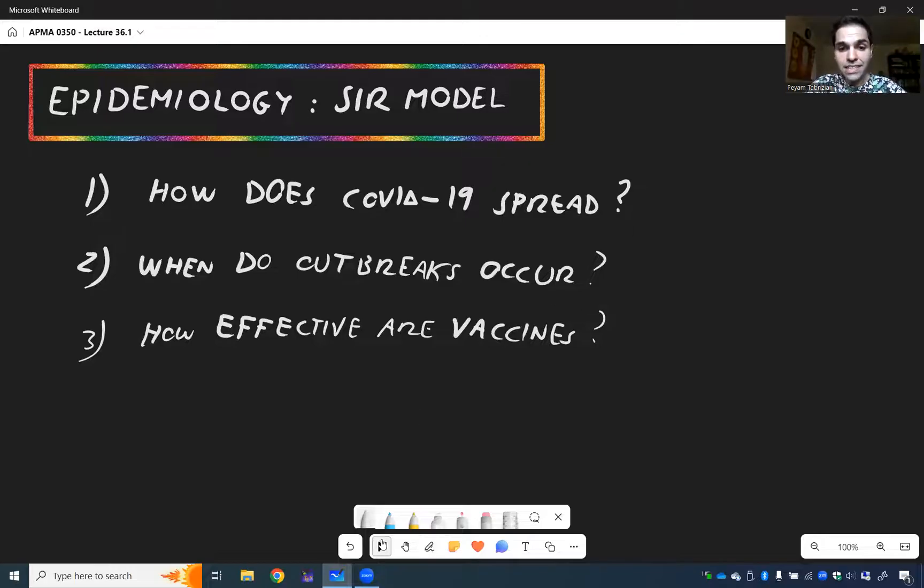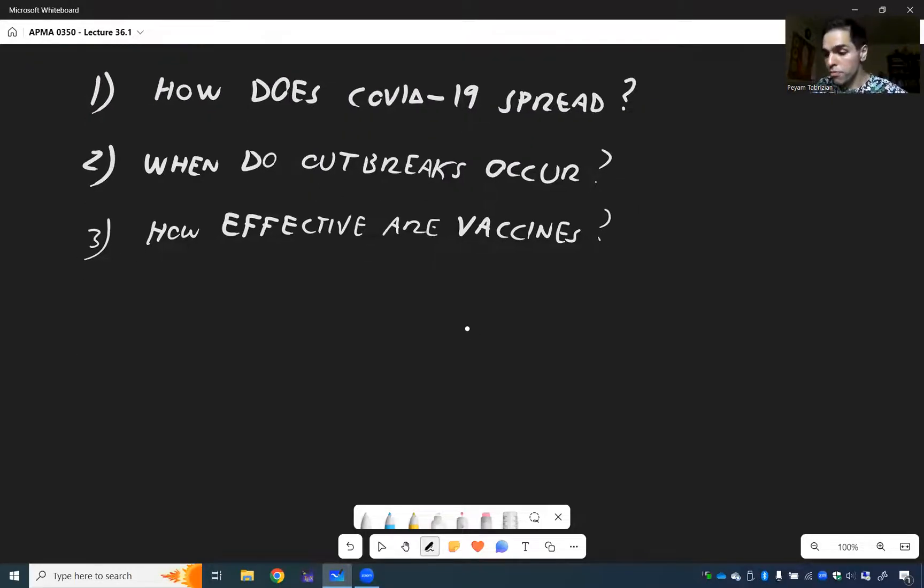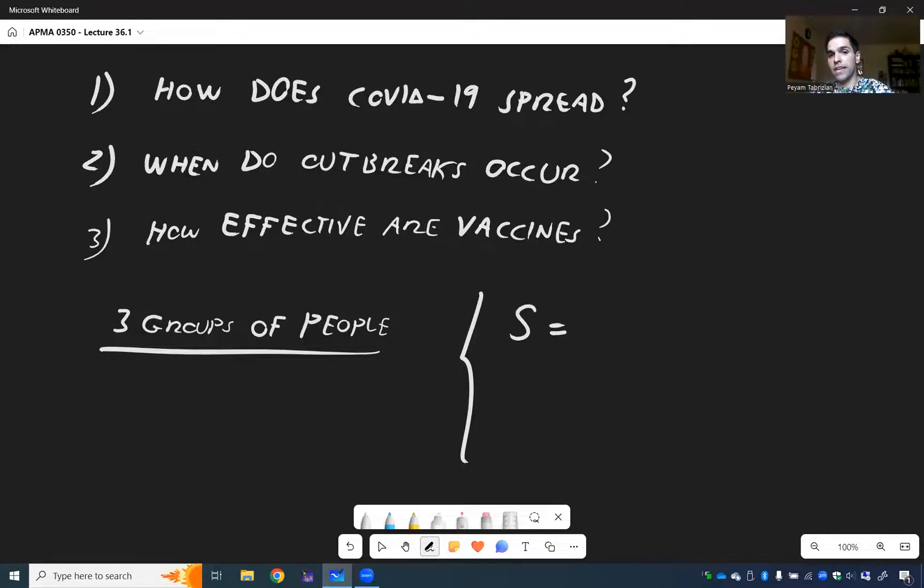So in this case, suppose you have three groups of people. And by the way, this is what's called the SIR model because it has those three unknowns. One is the people who have been exposed to COVID, and those are called susceptible.